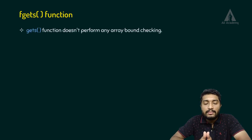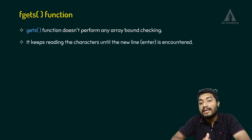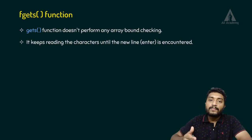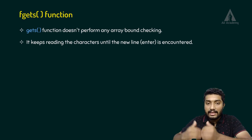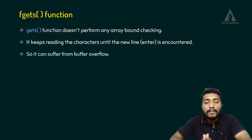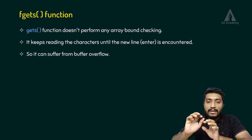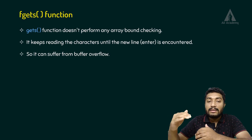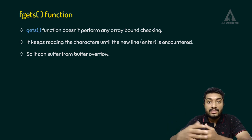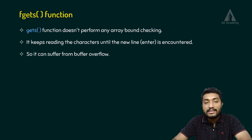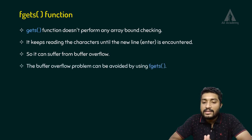Gets function does not perform any array bound checking. It keeps reading characters until a newline character is encountered. Because of this, it can suffer from buffer overflow. If we have a character array declared with a particular size, gets may read beyond that size, causing a buffer overflow problem. For this reason, this function should be eliminated from use.